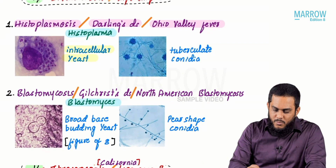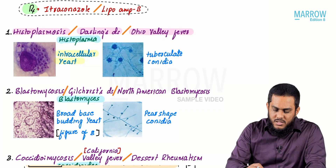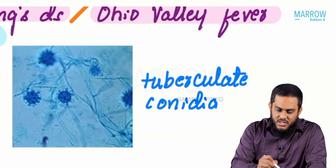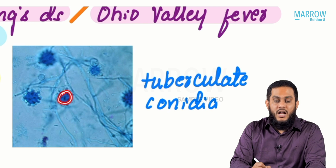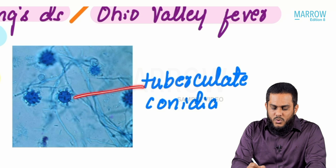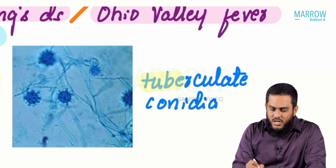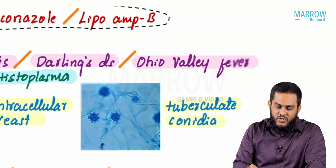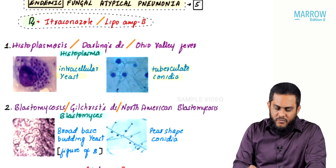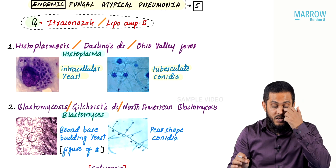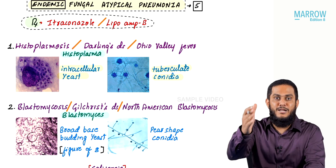In the mold form of Histoplasma, you see conidia surrounded by tubercles — these are called tuberculate conidia. If you see tuberculate conidia, it is confirmed to be the mold form of Histoplasma. So: yeast form = intracellular yeast; mold form = tuberculate conidia.